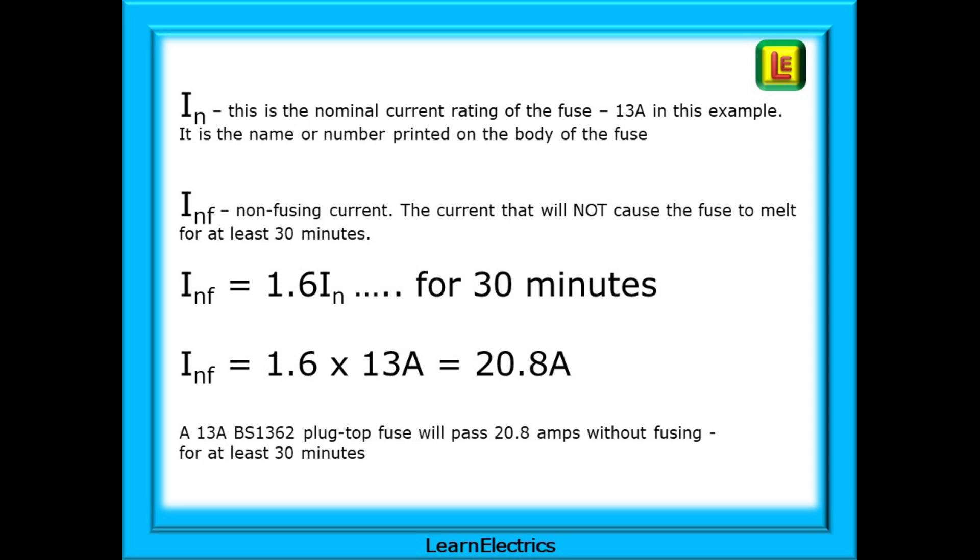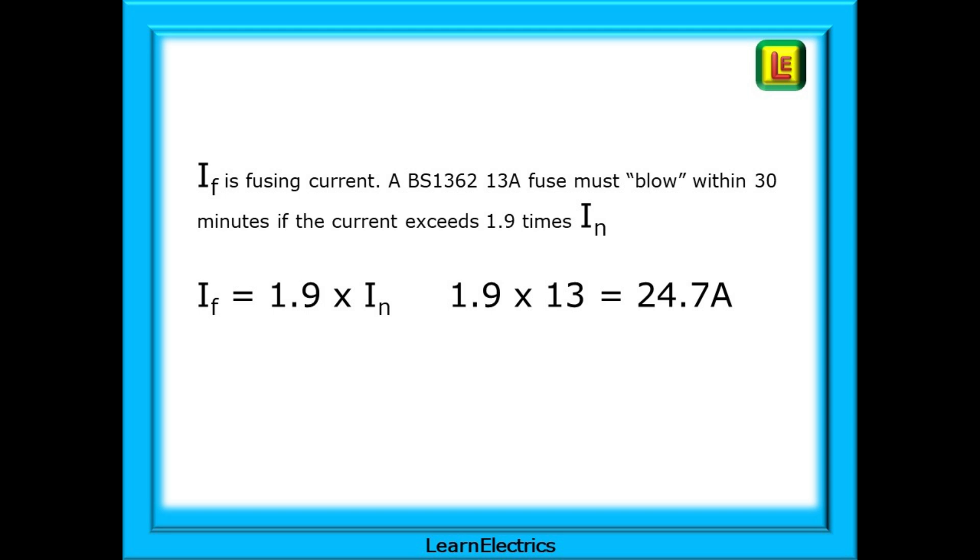Surprised? There is more to come. IF is the fusing current, the current that it will fuse at. A BS1362 13 amp fuse must blow within 30 minutes if the current exceeds 1.9 times the nominal current or IN. So, we have IF, the fusing current, equal to 1.9 times the nominal current of the fuse. IF is 1.9 times 13 amps which gives us a value for fusing current of 24.7 amps. If a constant 24.7 amps flows through the fuse then it must operate, must blow within 30 minutes.